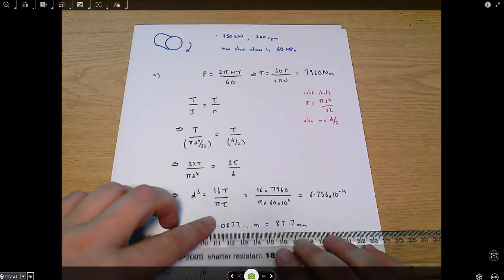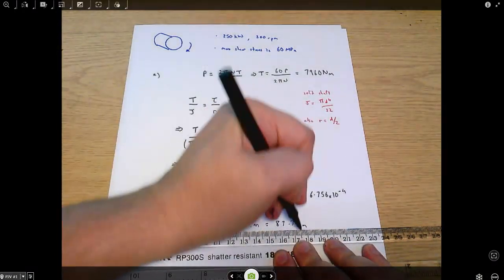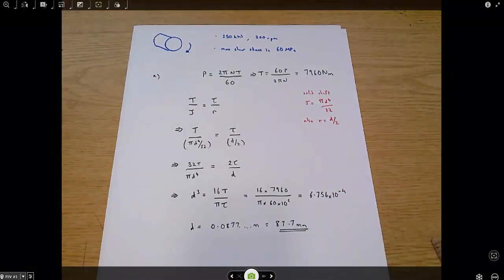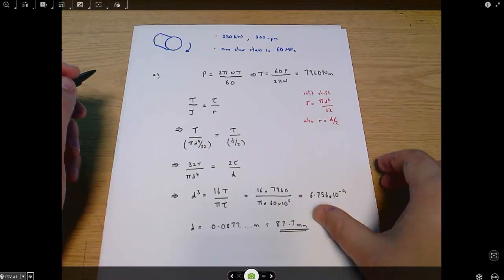That's the diameter of shaft you need in order to have a shear stress which is no greater than 60 megapascals. And that is part A solved.